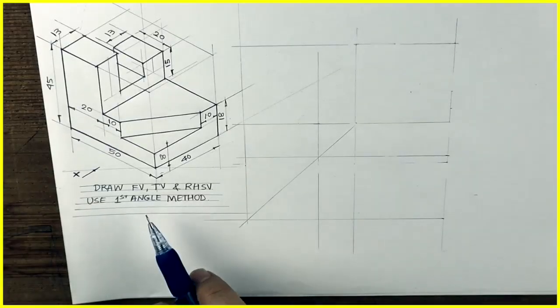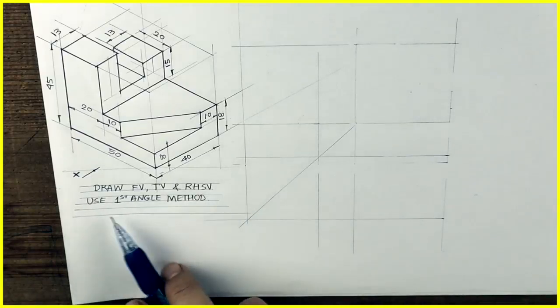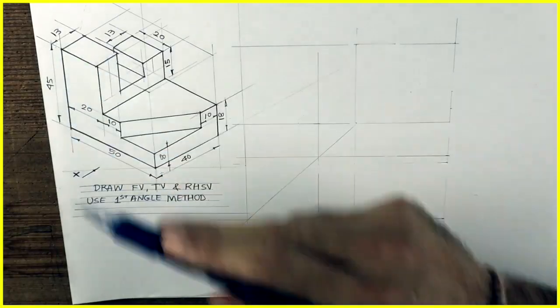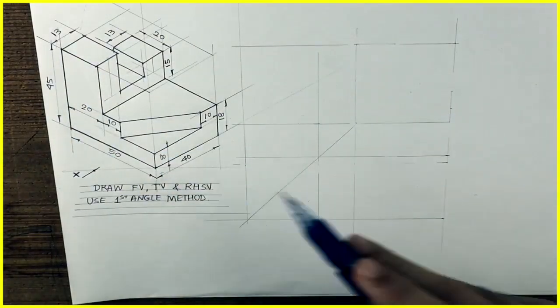Welcome to technical drawing. In this we will draw front view, top view and right-hand side view using first angle method. When you see from the front, length is 50, width is 40 and height is 45. So first we will draw the layout.